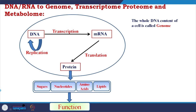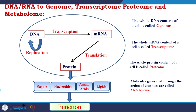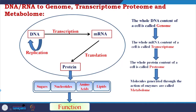The whole DNA content of the cell is called the genome. The whole mRNA content of the cell is called the transcriptome. The whole protein content of the cell is called the proteome, and the molecules generated through the action of enzymes are called the metabolome. So from DNA through replication forming DNA, from DNA through transcription making mRNA, from mRNA through translation making protein, and through protein generating metabolites — they are all connected, starting from DNA.